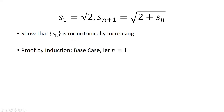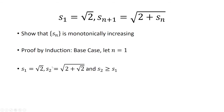We're going to do this by induction, and our base case will be when n equals 1. Plugging in n equals 1, we get s₂ which is the square root of 2 plus s₁, which is the square root of 2. Clearly, the square root of 2 plus square root of 2 is greater than the square root of 2, which means s₂ is greater than or equal to s₁.